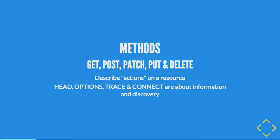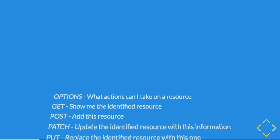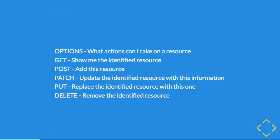HTTP has the concept of methods, which you may have seen if you've built APIs or worked with REST. Those are GET, POST, PATCH, PUT, and DELETE — there are others. What they do is describe actions between the client and the server. There are also HEAD, OPTIONS, TRACE, and CONNECT, which are more about discovery. OPTIONS says 'what am I allowed to do?', GET says 'get me the resource at a particular URI', POST says 'create a resource at this URI'. DELETE, PUT, PATCH are all different variations of that idea.